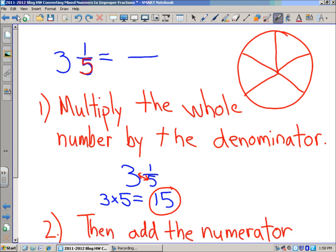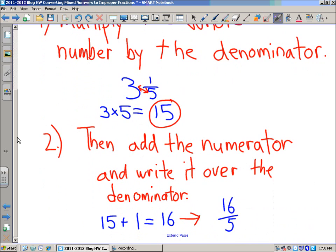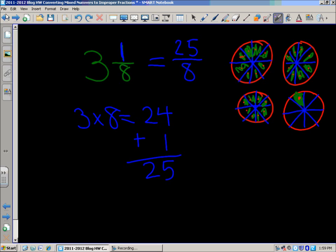So, basically, you just multiply the whole number by the denominator then add the numerator and write it over the denominator so you'd end up with an improper fraction. Thanks for checking out Mr. Marek's EduBlog. And we will see you again next time.